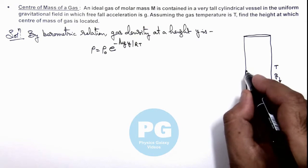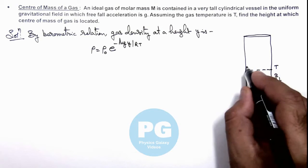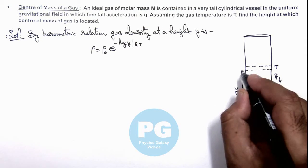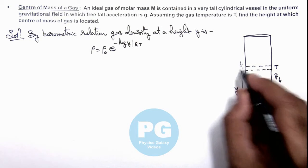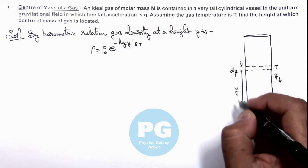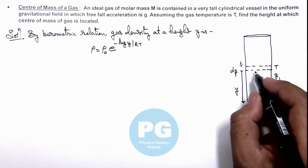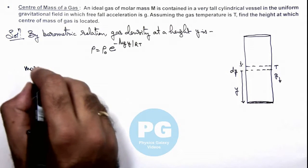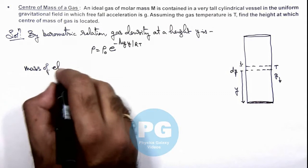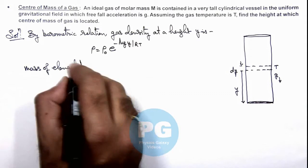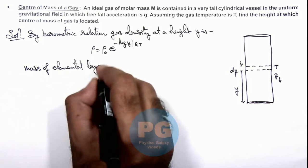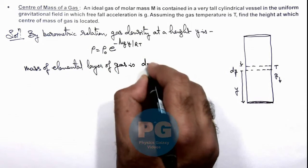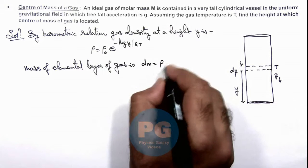Then to find out the center of mass, we consider an elemental layer of gas at a height y which is of width dy. So in this situation for this elemental layer, we can write down the mass of elemental layer of gas is dm, we can write as density multiplied by...